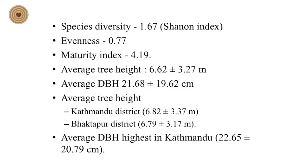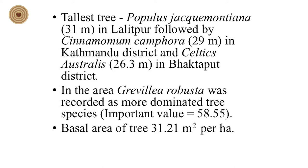Species diversity was 1.67, evenness was 0.77, maturity index was 4.19, and average tree height was 6.62 meters. Average DBH was 21.68, and in Kathmandu district average DBH was 22.65. The tallest tree was found in Lalitpur district — Populus jacquemontiana with a height of 31 meters. In Kathmandu district it was Cinnamomum camphora at 29 meters, and in Bhaktapur district it was Celtis australis at 26.3 meters.